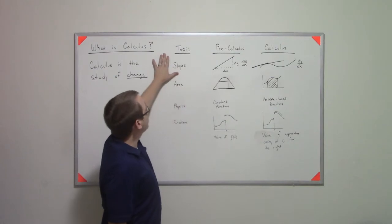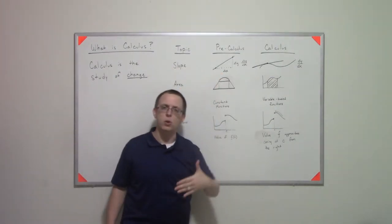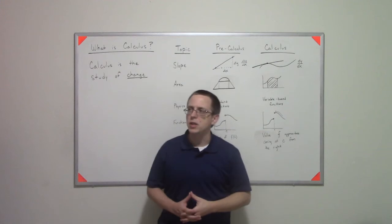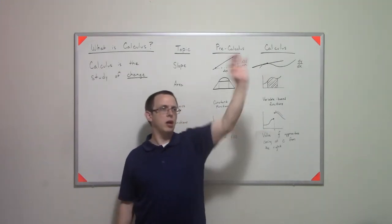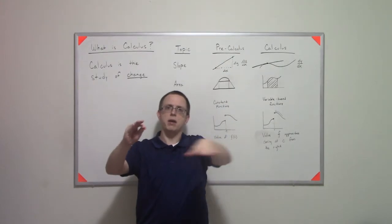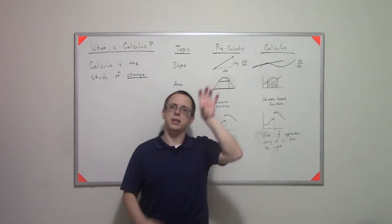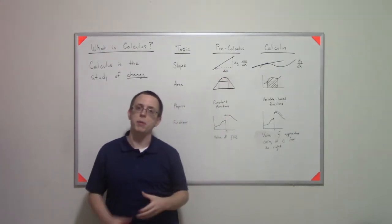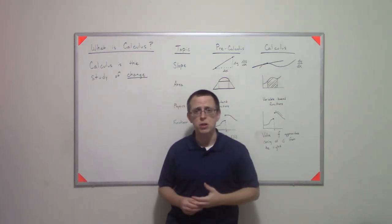So when we talked about the idea of slope in pre-calculus and below, the idea was simply to say I've got a line and I've got a point here and I've got a point here. I find the change in y, I find the change in x, I can take delta y divided by delta x, and that's my slope.